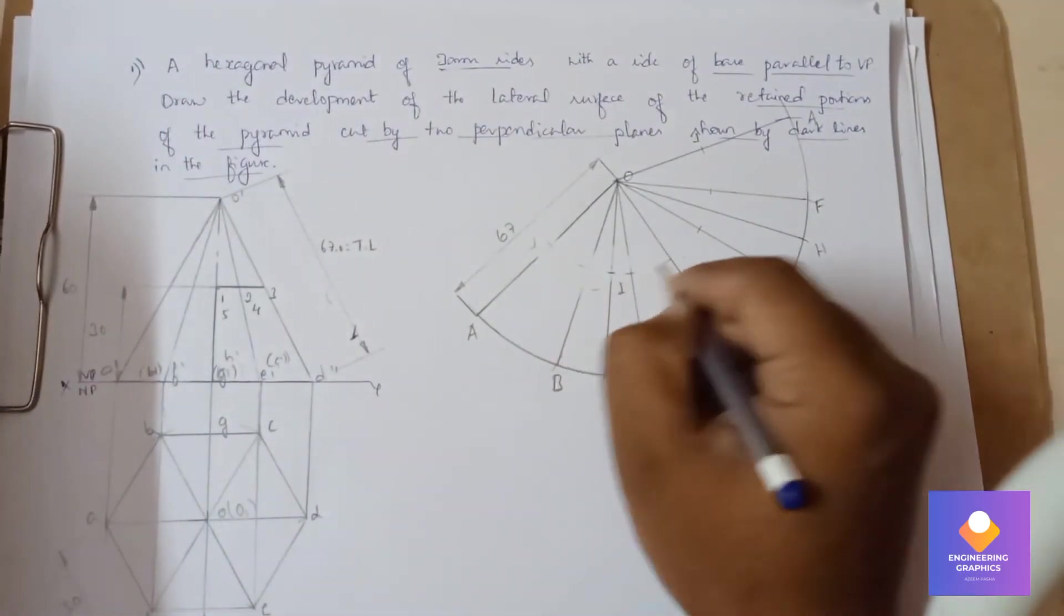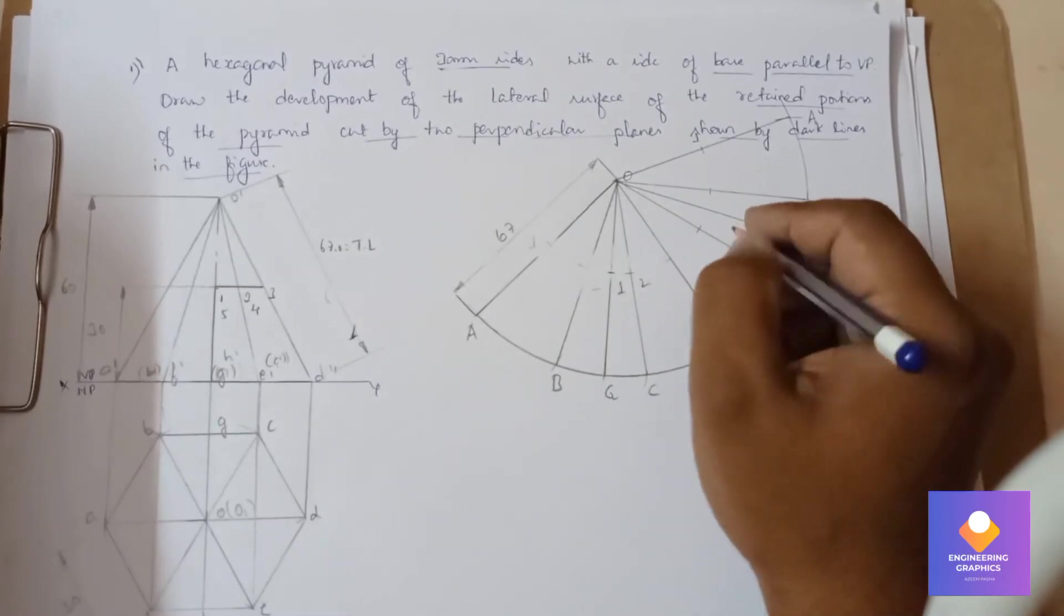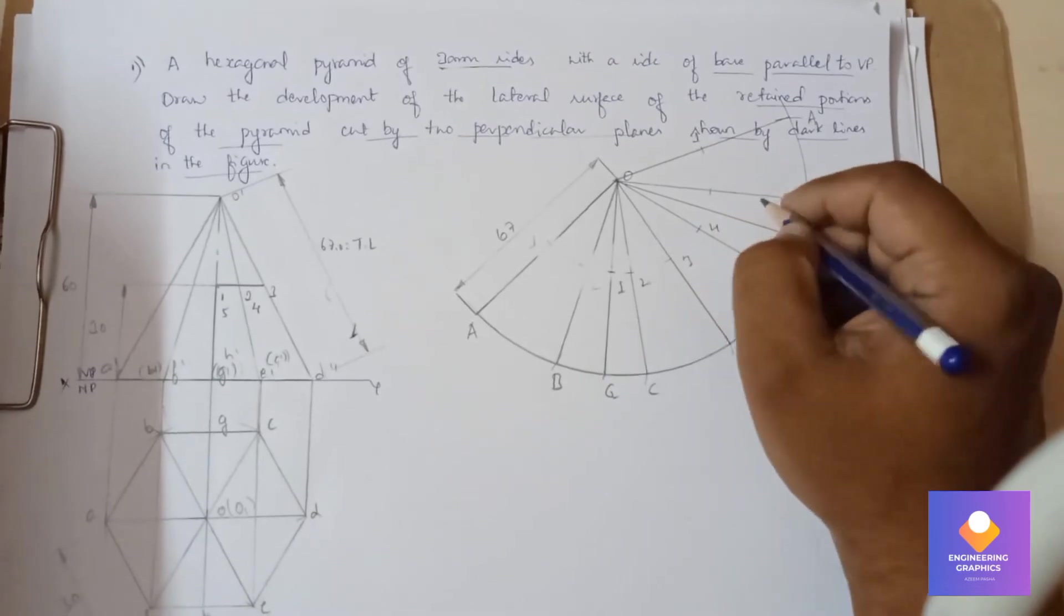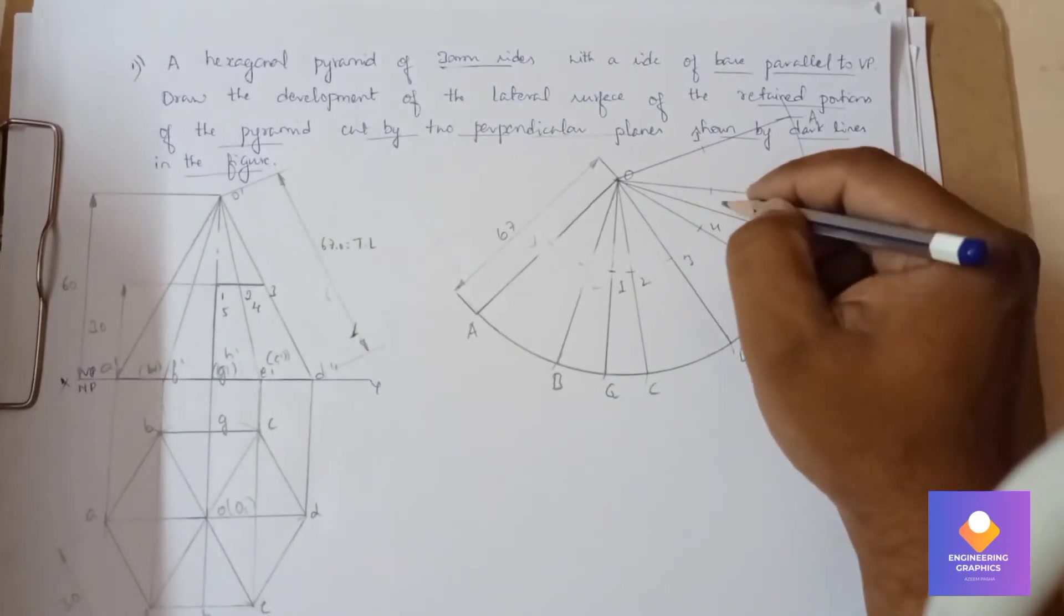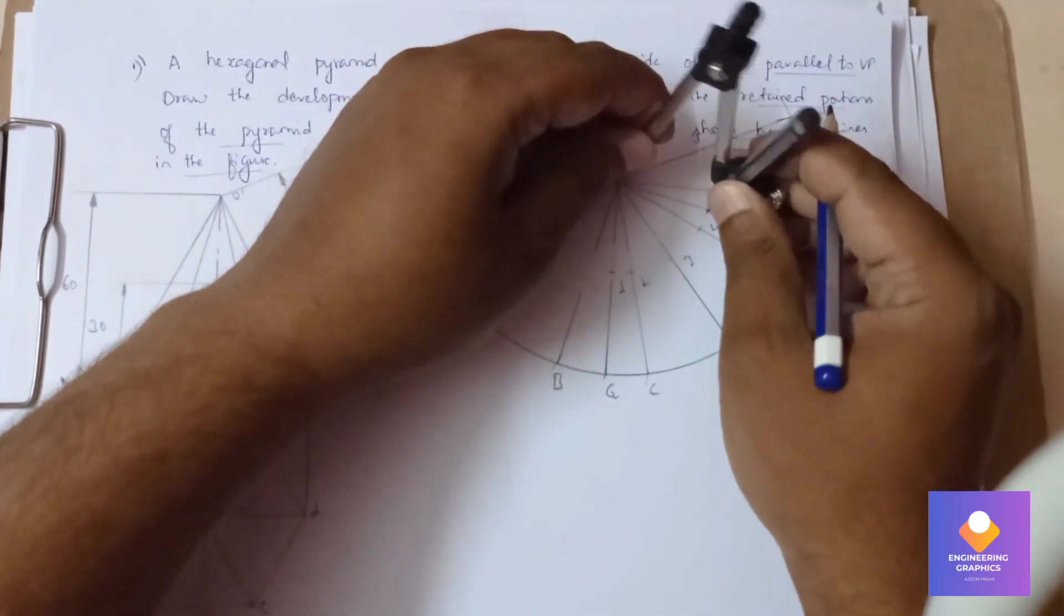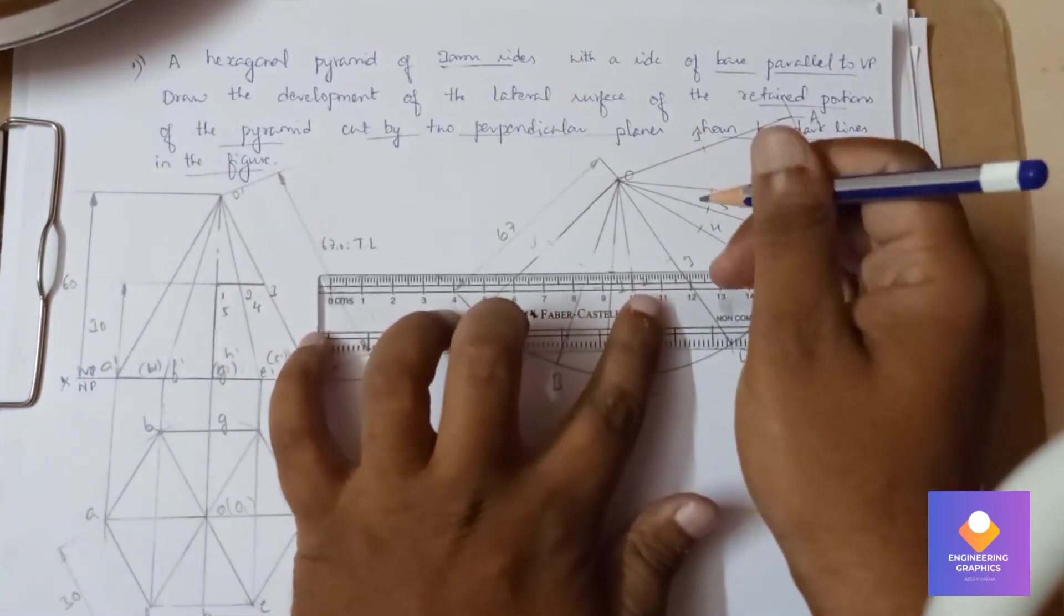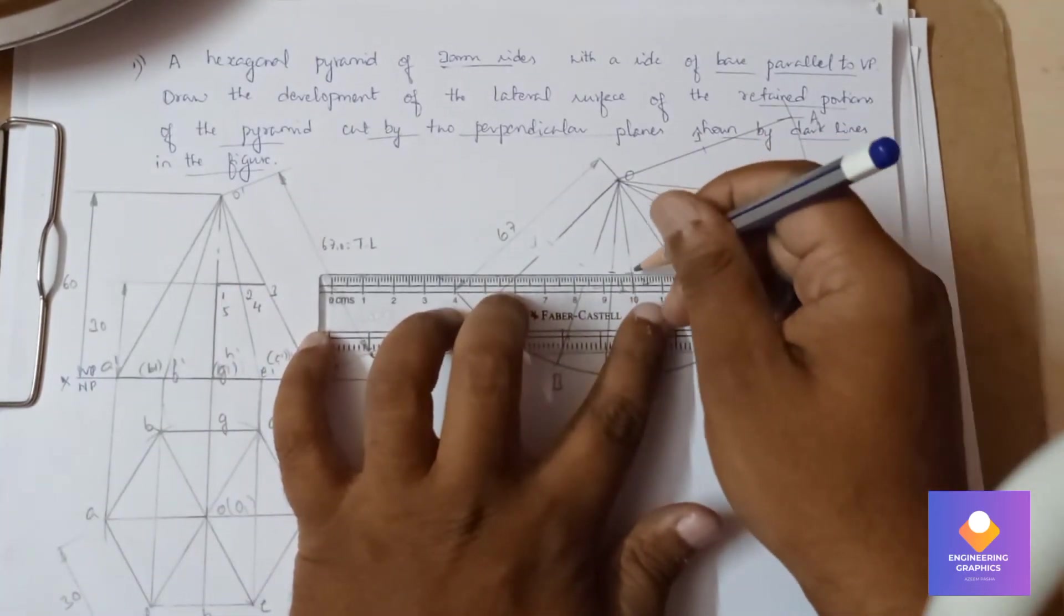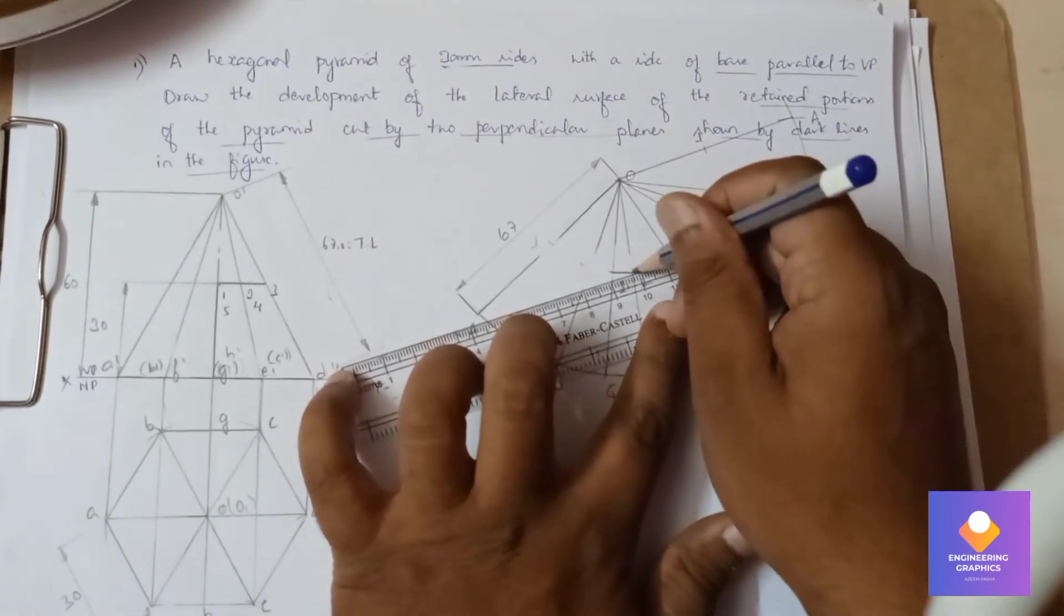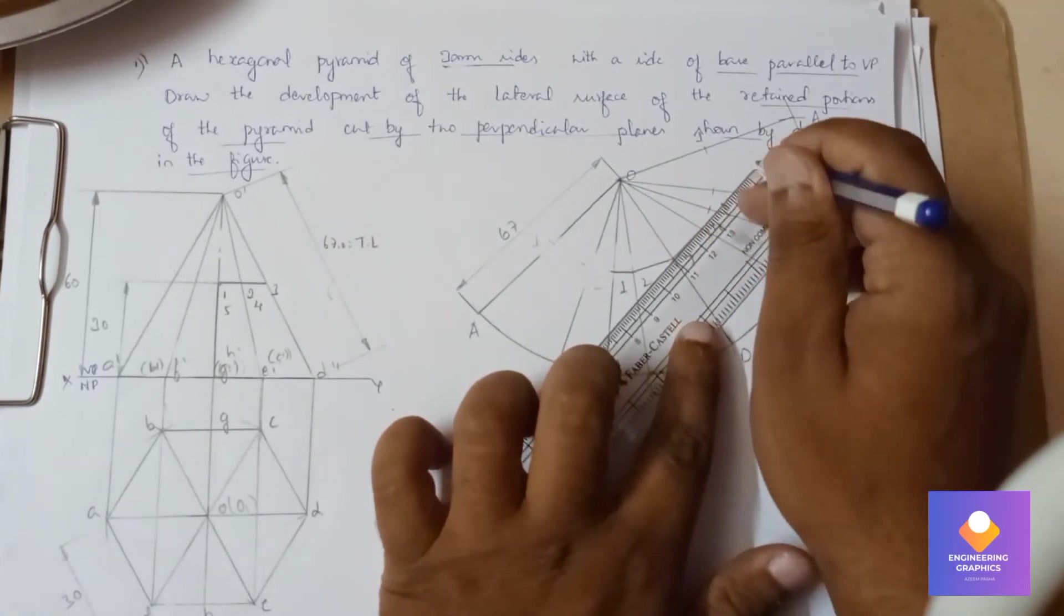That is one. Next it is on the C, two, three, four, and we have five. So we should join this with a straight line using a scale. We can join.